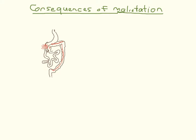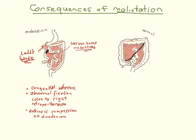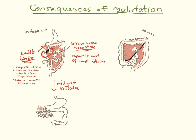Malrotation can lead to two problems. First, congenital adhesions called Ladd's bands can form during malrotation and extend from the cecum to the liver, and can compress the duodenum as they pass over it. More importantly, the proximity of the distal duodenum and cecum allow the base of the mesentery, which normally supports the entire length of jejunum and ileum, to become very narrow. The entire mass of small bowel is thus much more likely to twist on itself and strangulate, resulting in midgut volvulus.